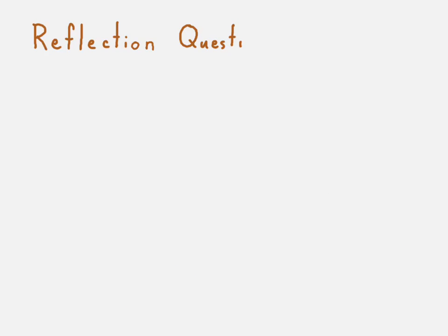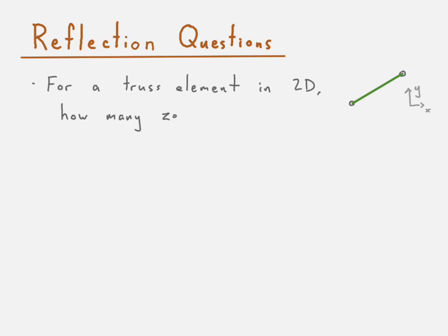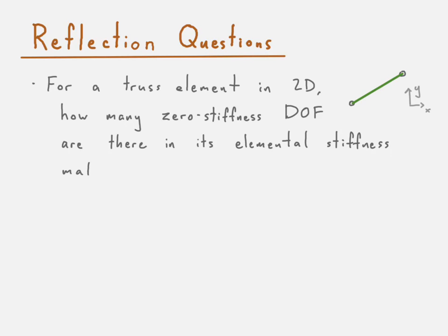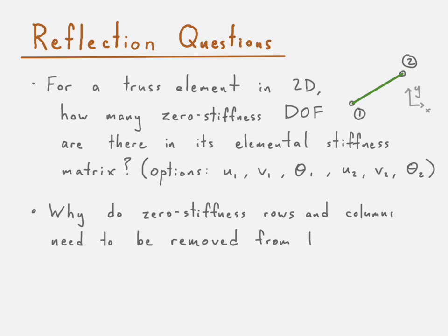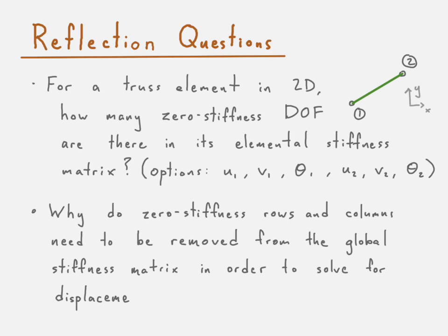So the reflection questions: Let's say that we have a truss element in two dimensions — how many zero stiffness degrees of freedom are there in its elemental stiffness matrix? And the next question is: why do the zero stiffness rows and columns need to be removed from the global stiffness matrix equation in order to solve for the displacements? Why can't we keep them in there? Those are the only reflection questions, and that concludes this video. Thank you very much.